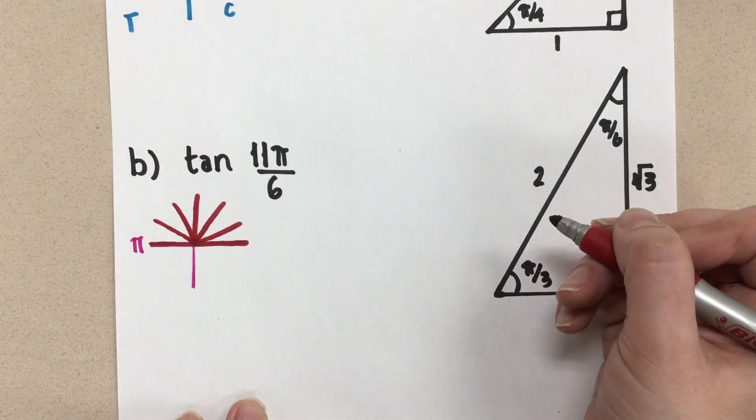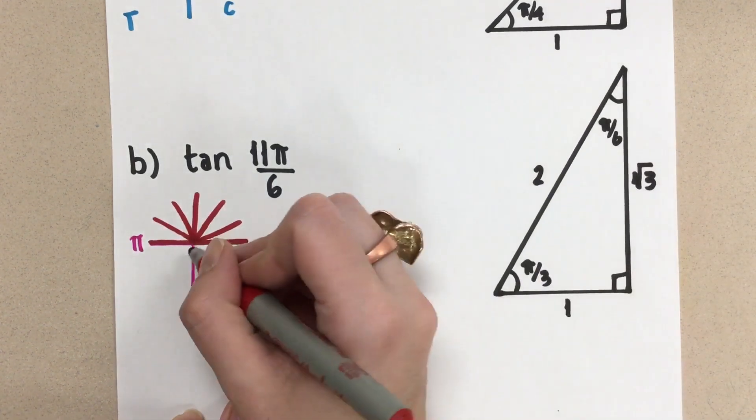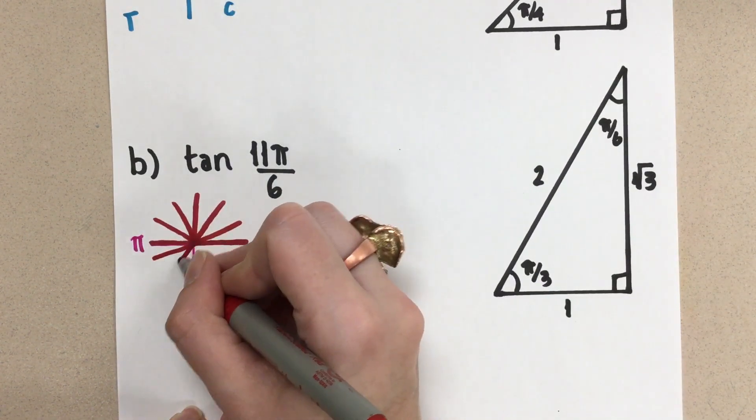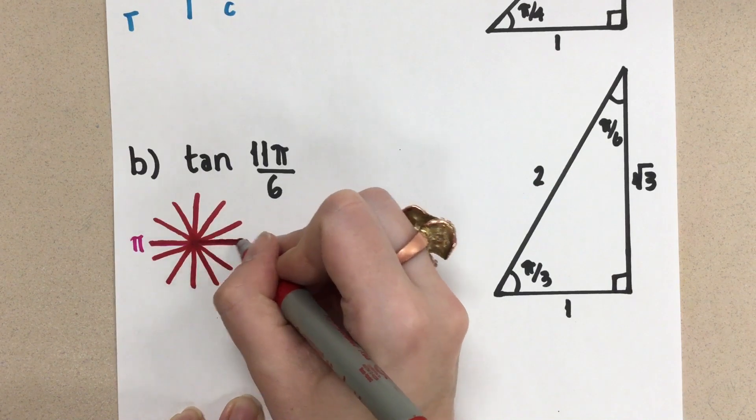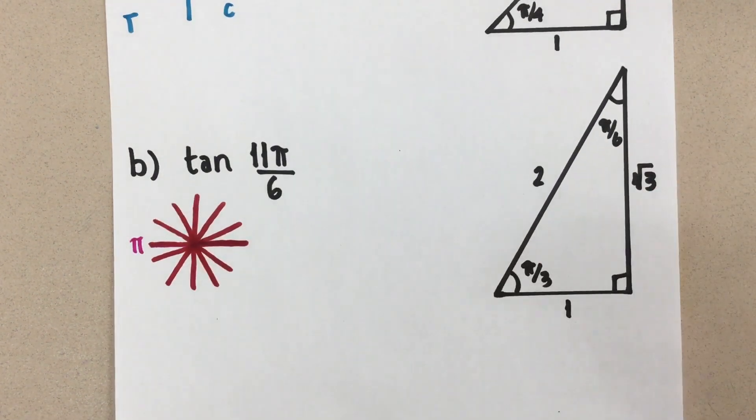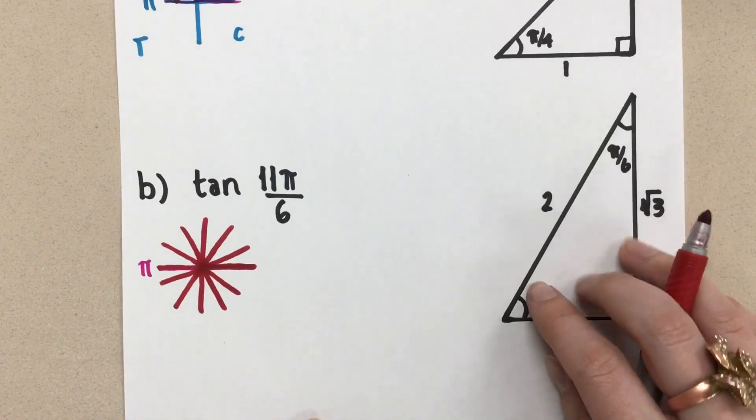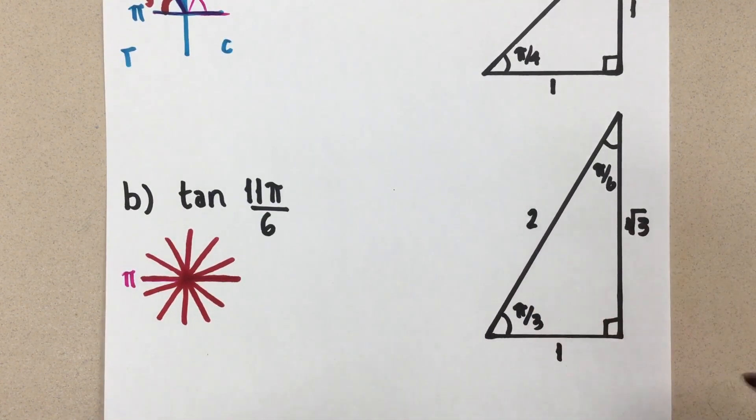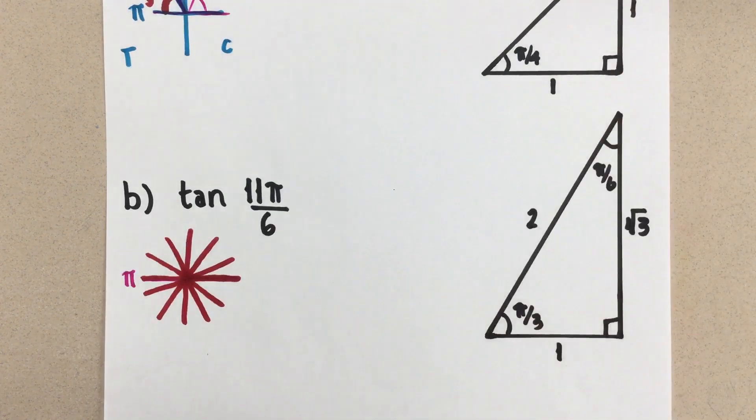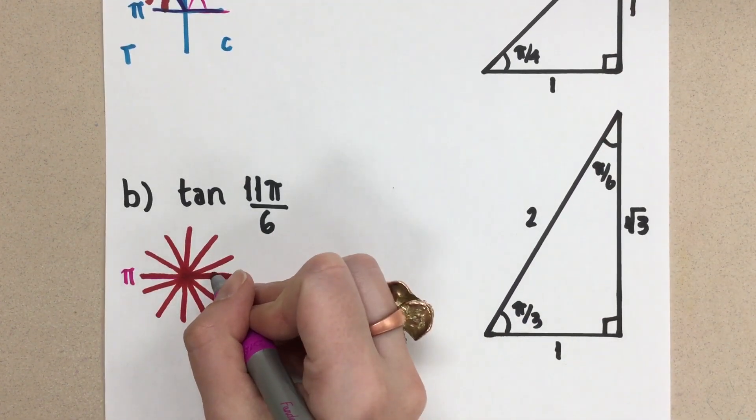I need more than 1 π, right? I need 11 sixths. That's more than 1 π. So I'm going to keep going. 2, 3, 4, 5, 6. So now I've broken up the 2π into 6. So I have 12 sixths here. I want 11 sixths. So starting in the positive x, I'm going to go around. 1, 2, 3, 4,